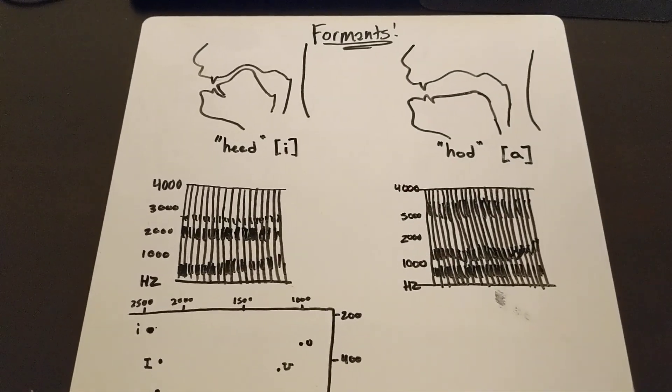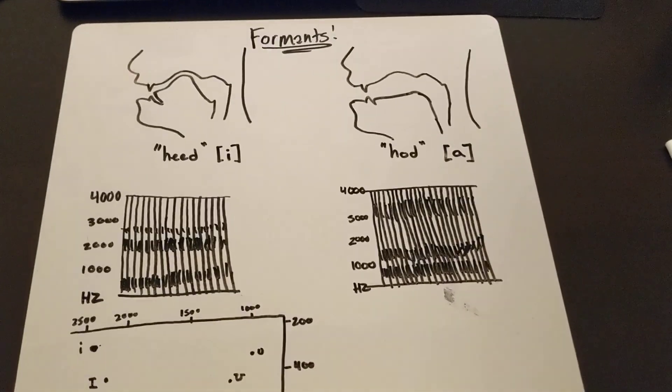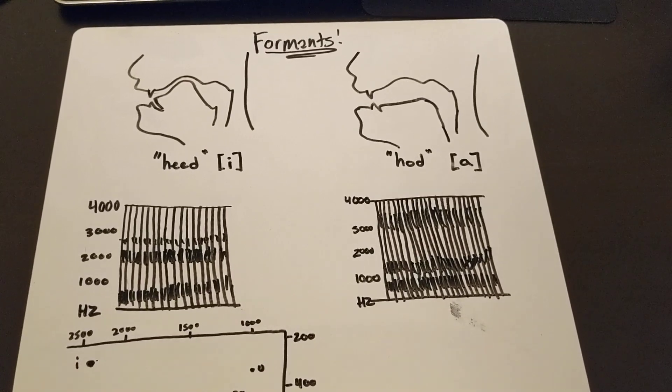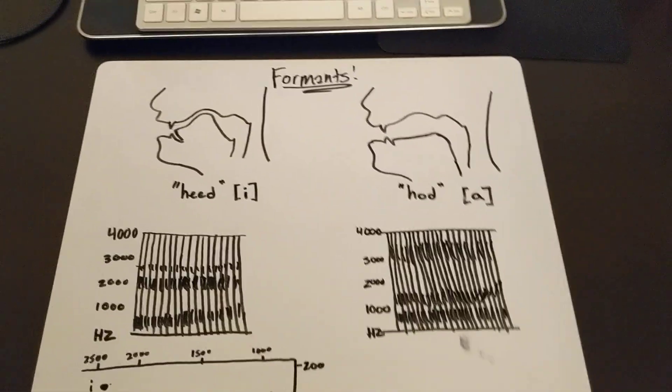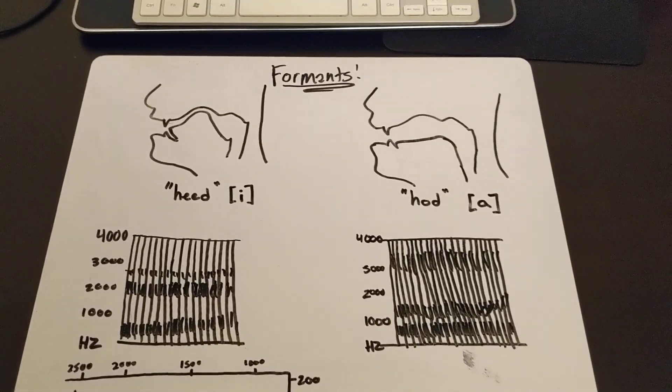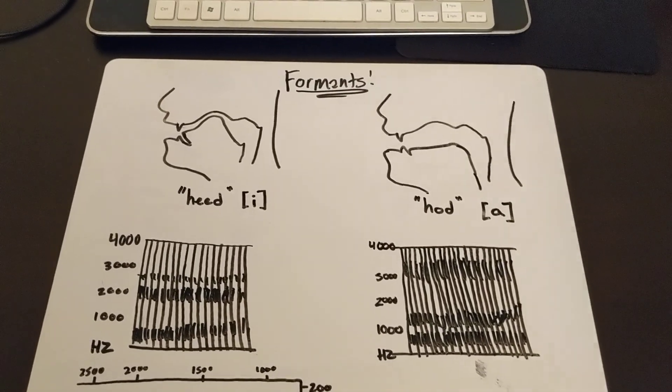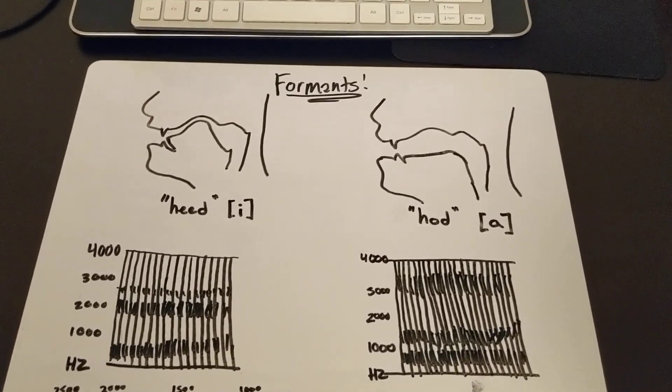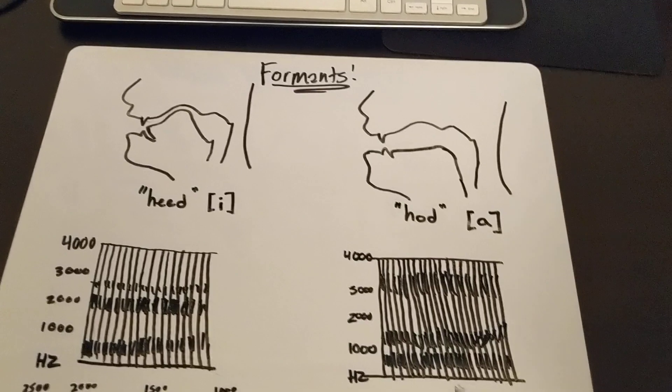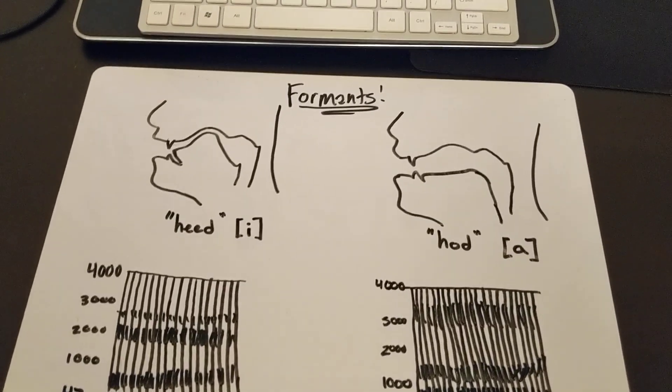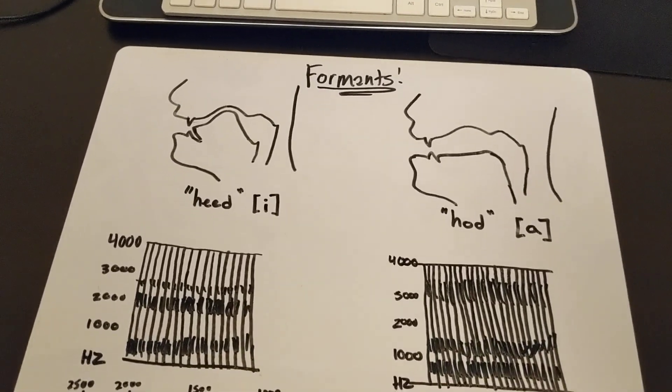Folks, get ready to rumble because this is a mini-lesson about formants. Formants are something that we measure mostly when we're looking at vowels, but there are also reasons that we would look at them with regard to some consonants as well. A lot of reasons, actually, but we're going to talk about them with regard to vowel systems.